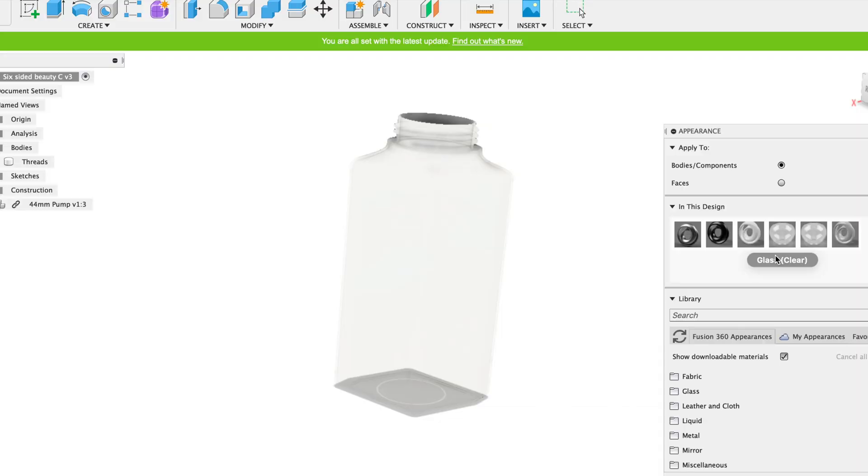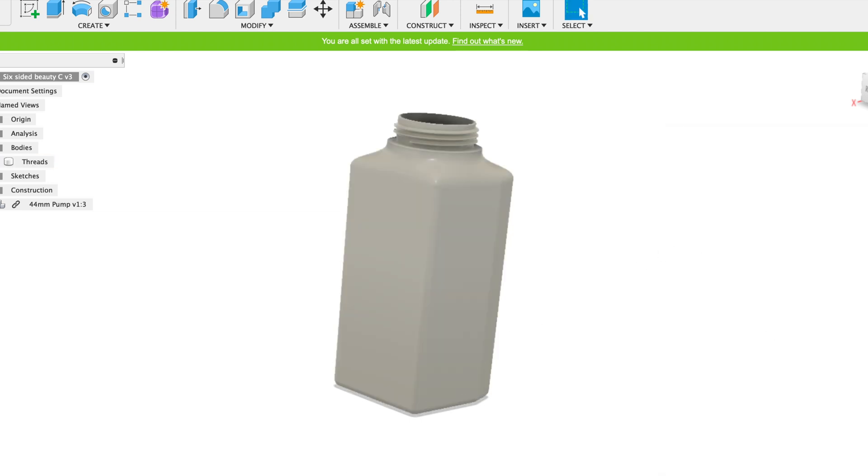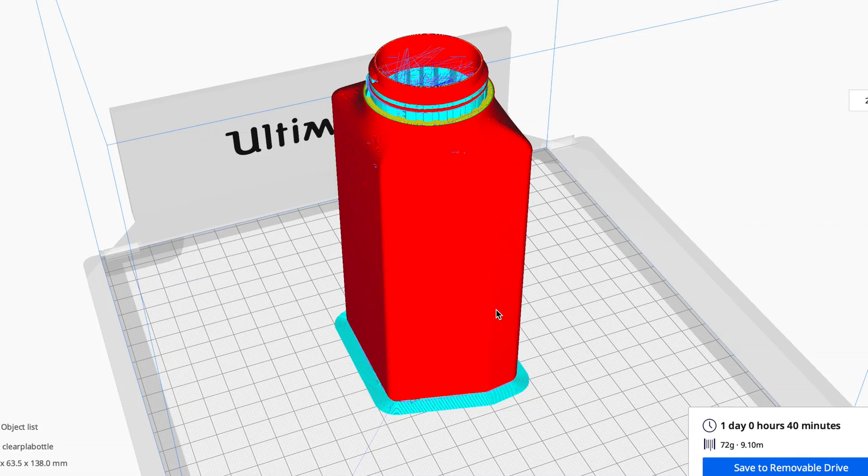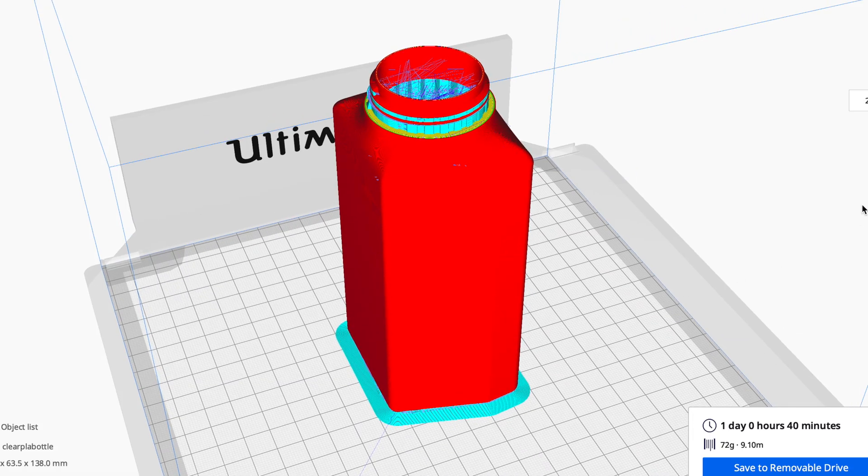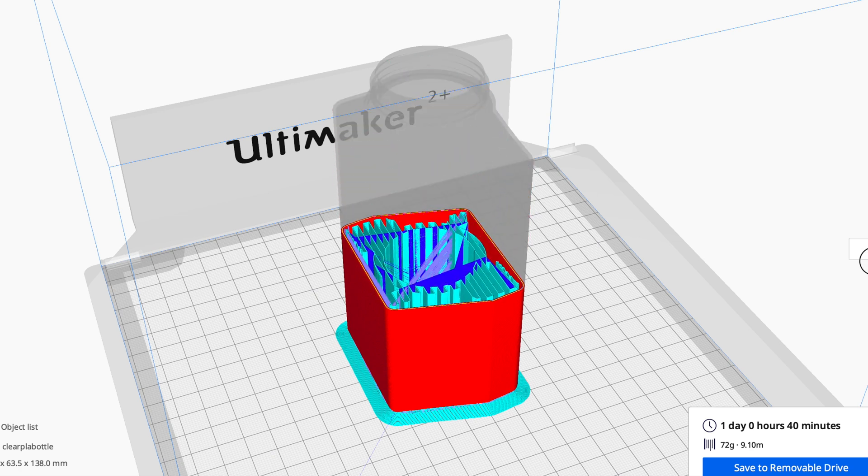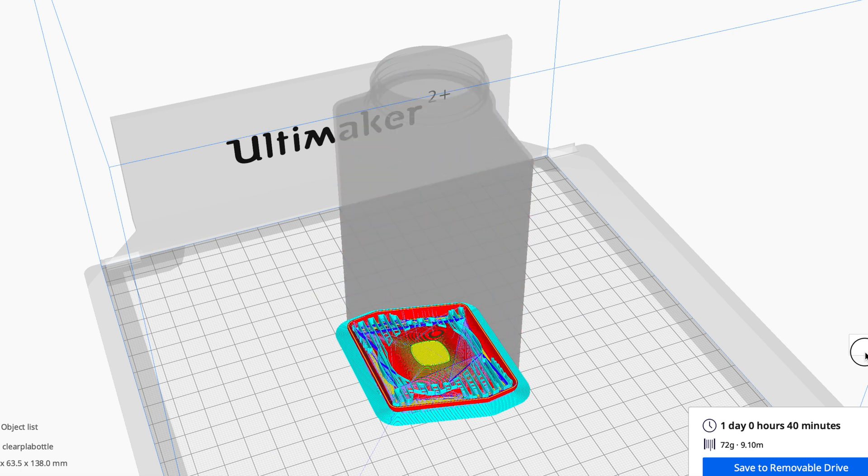All right, so to keep this comparison even, we'll use the same data that we did in the last video for the SLA clear bottle. We'll use the same data, just rotating it around here in Fusion, and we will export that into the Cura slicer and print it on the Ultimaker.